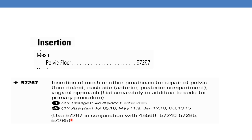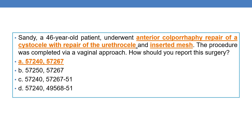As it is an add-on code, it must be used in conjunction with the primary procedure — which can be 4560, 57240 to 57265, and 57285. In our case, we are reporting 57267 along with 57240. So the correct option is 57240 and 57267.